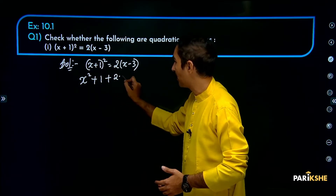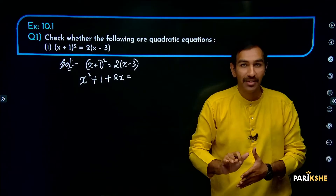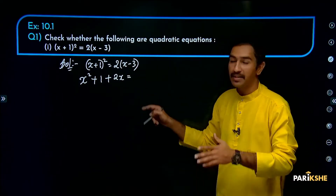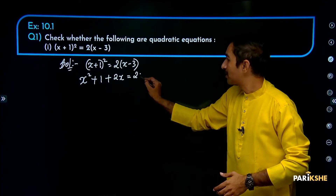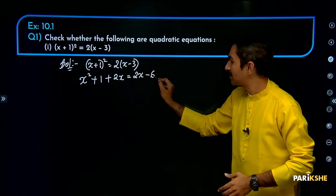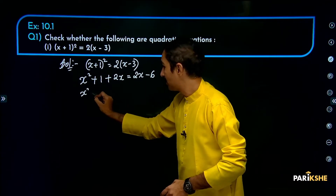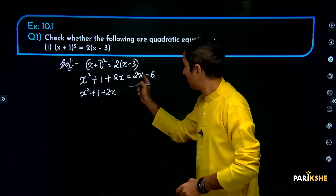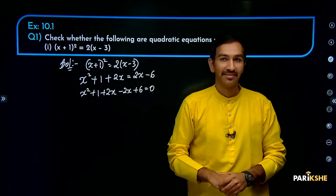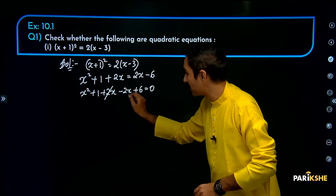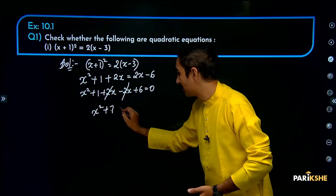Expanding: plus 2AB gives 2x. So 2 of (x minus 3) with brackets off gives multiplication: 2 into x = 2x, 2 into minus 3 = minus 6. Therefore: x squared plus 1 plus 2x minus 2x minus 6 plus 6, which is equal to 0. The plus 2x and minus 2x cancel; minus 6 plus 1 gives minus... so x squared plus 7 is equal to 0.